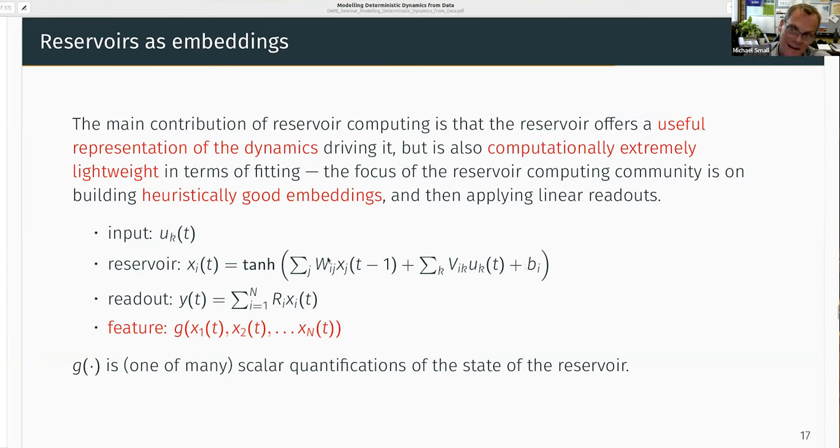We then try to match the behavior of those neurons, the XITs, to our desired target function, the W, the outputs, the thing that we're trying to actually model. And we do that with a linear fit with regularization of the weights RI.